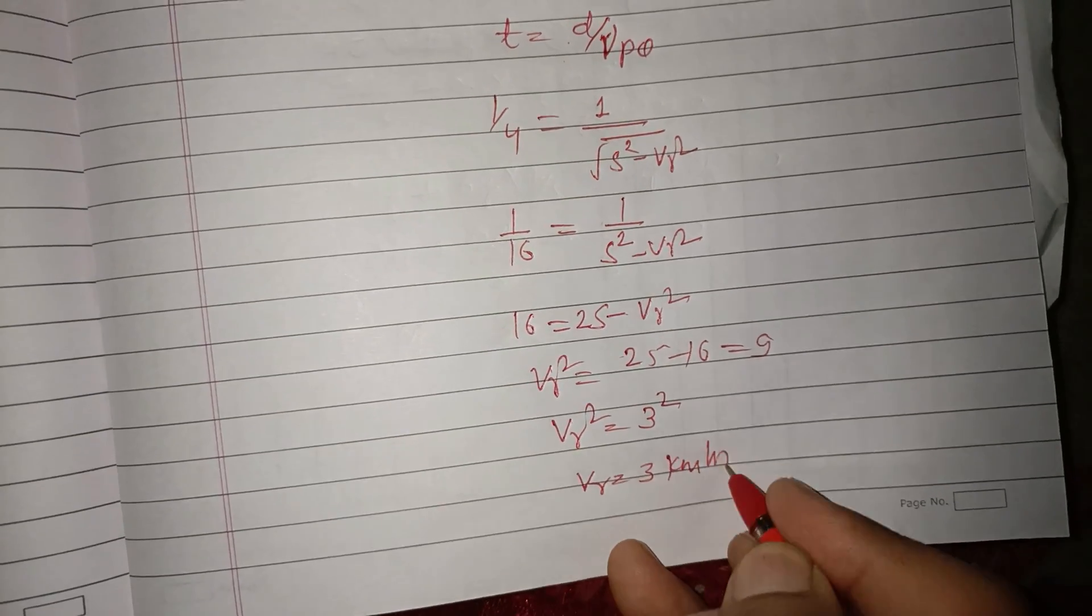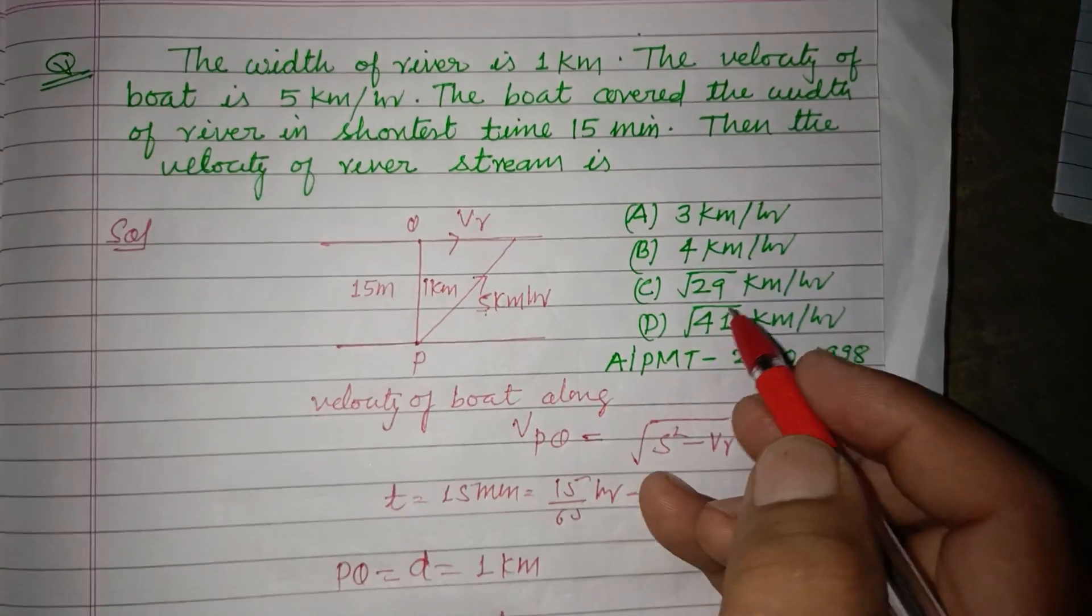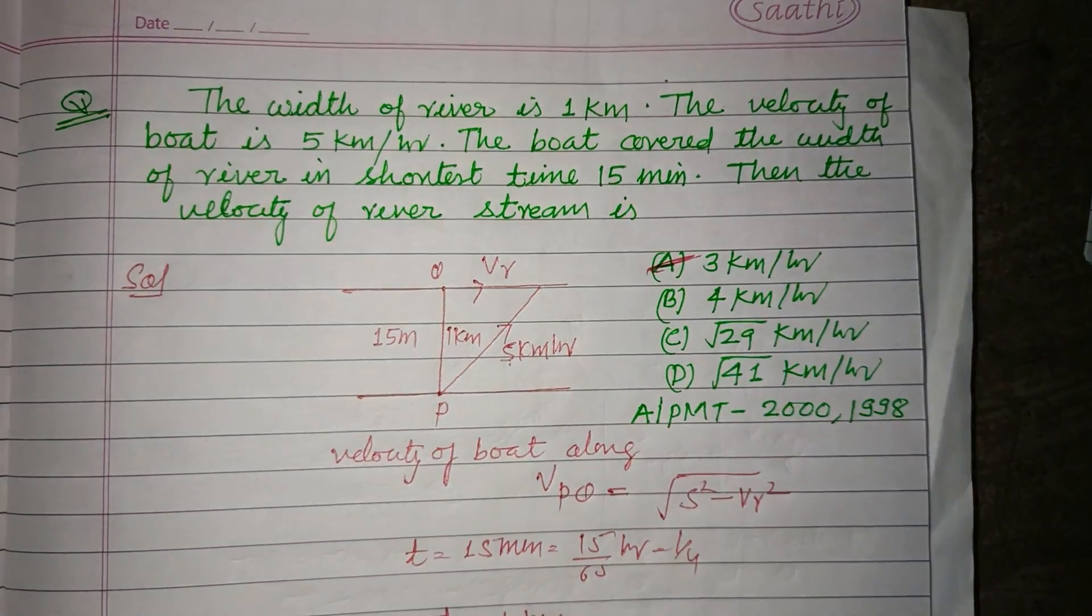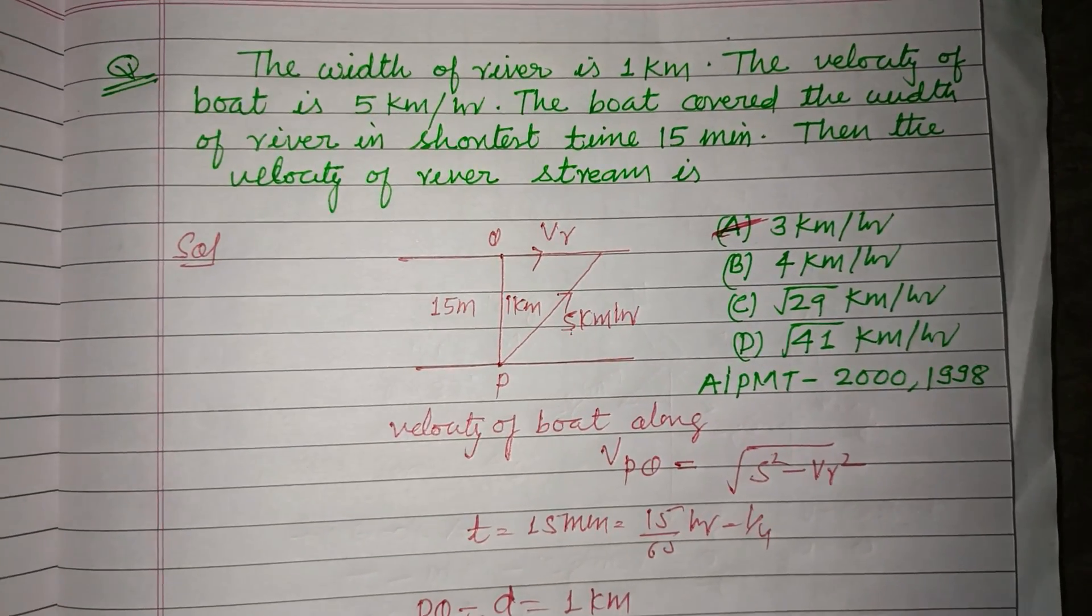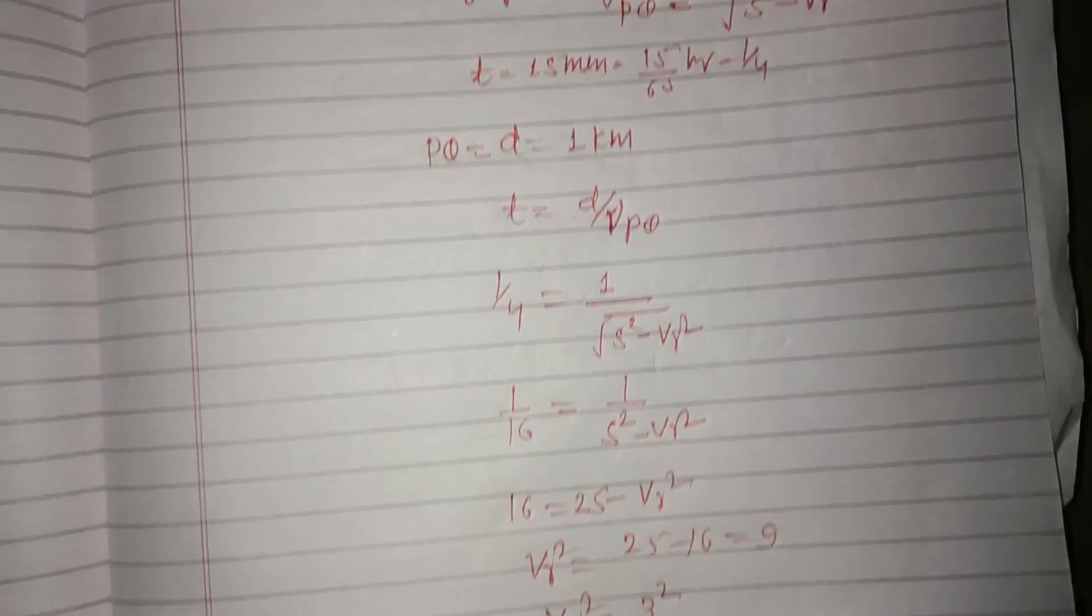3 kilometer per hour. So this is our velocity and answer is A, 3 kilometer per hour. So I hope you got it. Please like the video, subscribe the channel, thanks for watching.